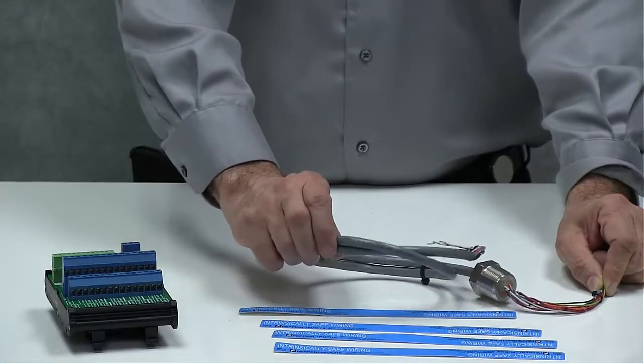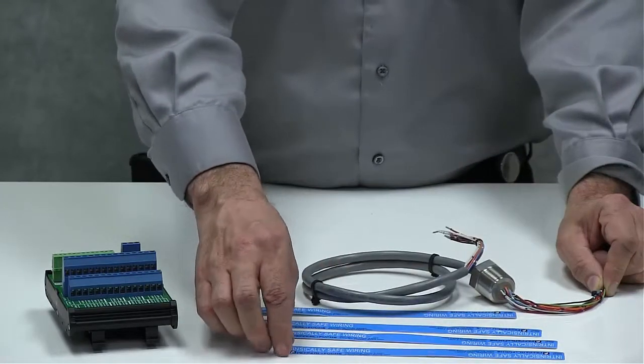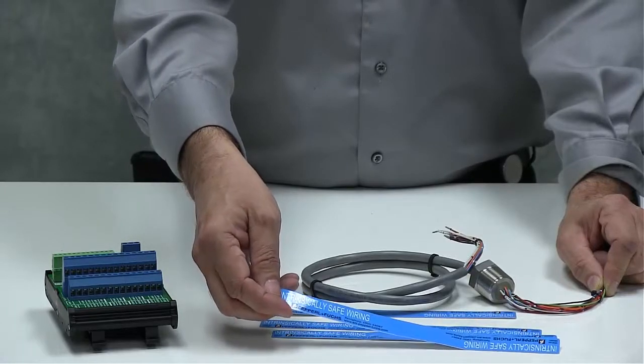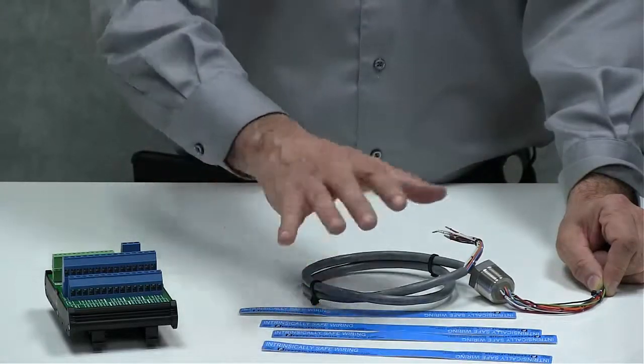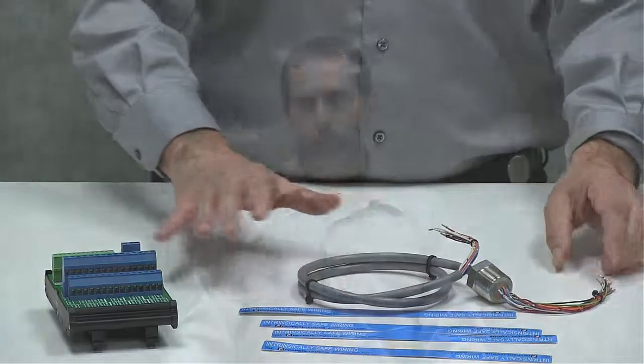Along with the IS cable clamp, you'll get four of these IS intrinsically safe wiring tags to identify this as intrinsically safe.